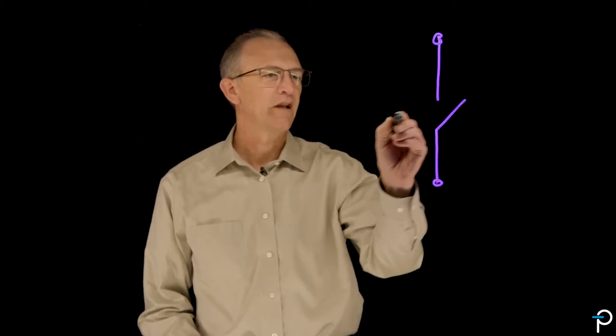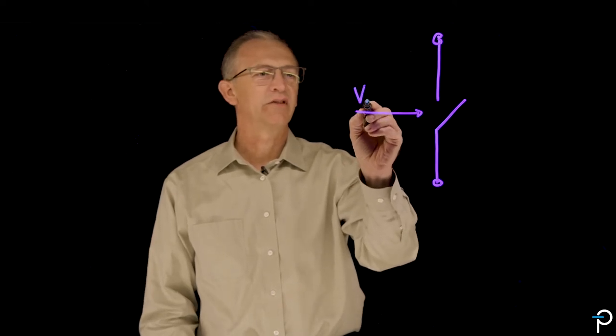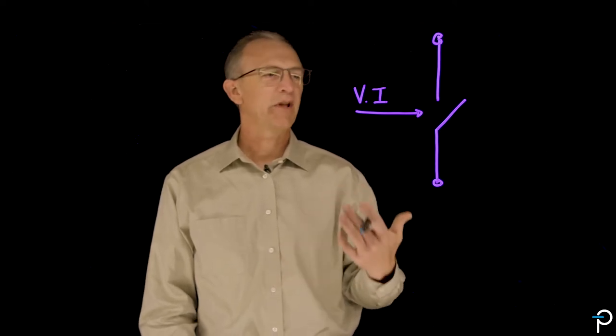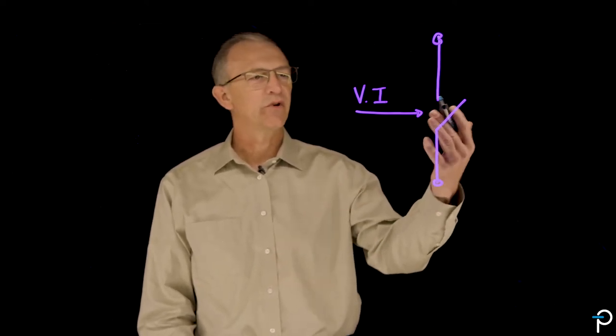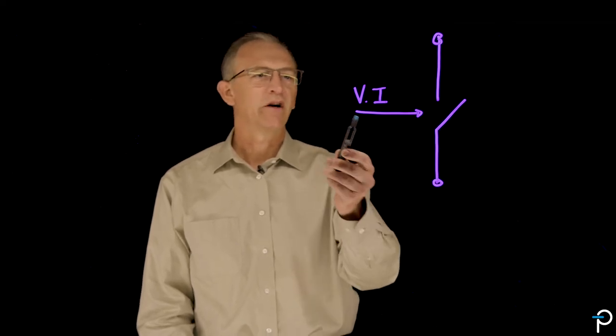Think back to your first days at university in your EE class. Your professor probably drew a picture of something like this. This is the ideal transistor controlled either by voltage or current, and he explained to you how circuits would work with a transistor with a switch that's controlled by other electronics.